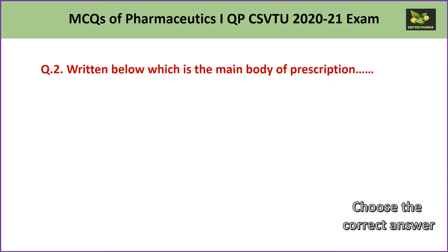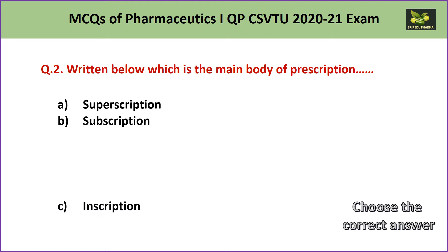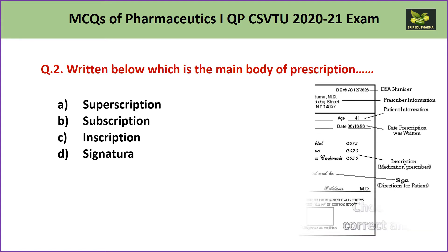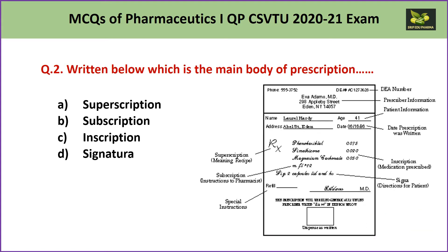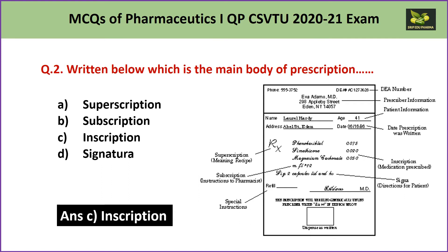Question number 2: Which is the main body of a prescription? A. Superscription, B. Subscription, C. Inscription, D. Signatura. Superscription is the Rx written on the left-hand side. Subscription contains instructions given to the patient or pharmacist. Inscription is the actual drug and quantity given in the prescription. Signatura is the signature. So the main body of the prescription is C — inscription.